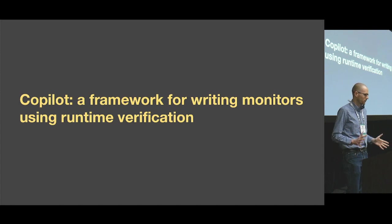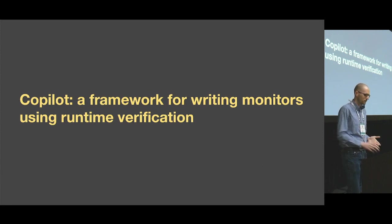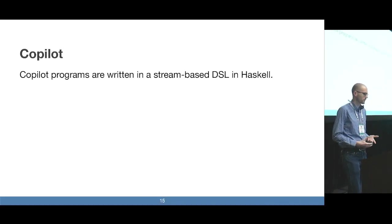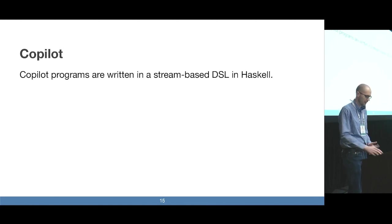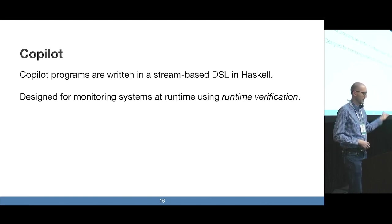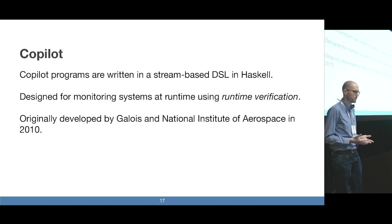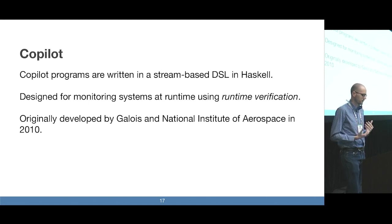In order to do that, I need to talk a bit more about the source language of the compiler, which is Copilot. When I say Copilot, I specifically mean a framework and language for writing monitors using a technique called runtime verification. It allows you to write programs in a stream-based domain-specific language that is embedded in Haskell. It's designed for writing monitors that you link against some larger application — the monitor will check if the application misbehaves at runtime and issue some kind of warning telling it to take corrective action. This is a pretty old language, originally developed back in 2010 and maintained mostly by NASA since then.